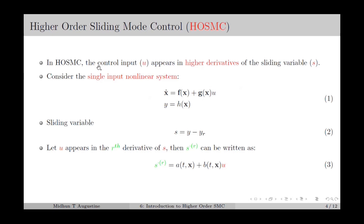In higher order sliding mode control, or HOSMC, the control input U appears in the higher derivatives of the sliding variable S. In general, we can consider a single input nonlinear system as in equation number 1, and the sliding variable is chosen as the output error as in equation number 2. The control input U appears in the rth derivative of the sliding variable S. The rth derivative of S can be written as in equation number 3, where the rth derivative is denoted by S raised to R dot, and it will be in the form of A(t,x) plus B(t,x) into U.